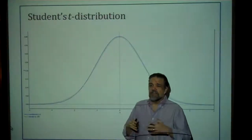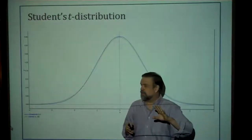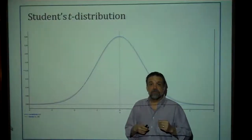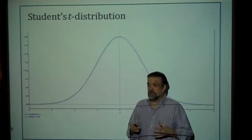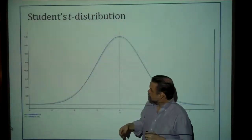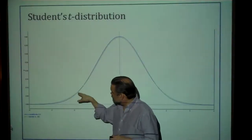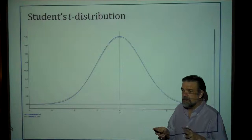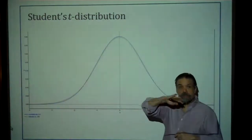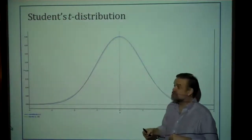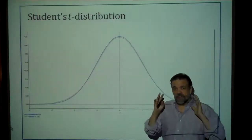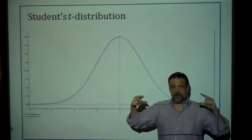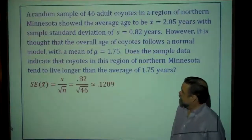It used to be that once you got above 30 or 40 degrees of freedom you'd just switch to a standard normal table. However, now that we have computers we don't have to do that, and there is a difference in the probabilities — the tail is still fatter than the standard normal. All you really need to know about t-distributions: they're unimodal and symmetric about zero, and they look just like the standard normal curve only fatter and more spread out.